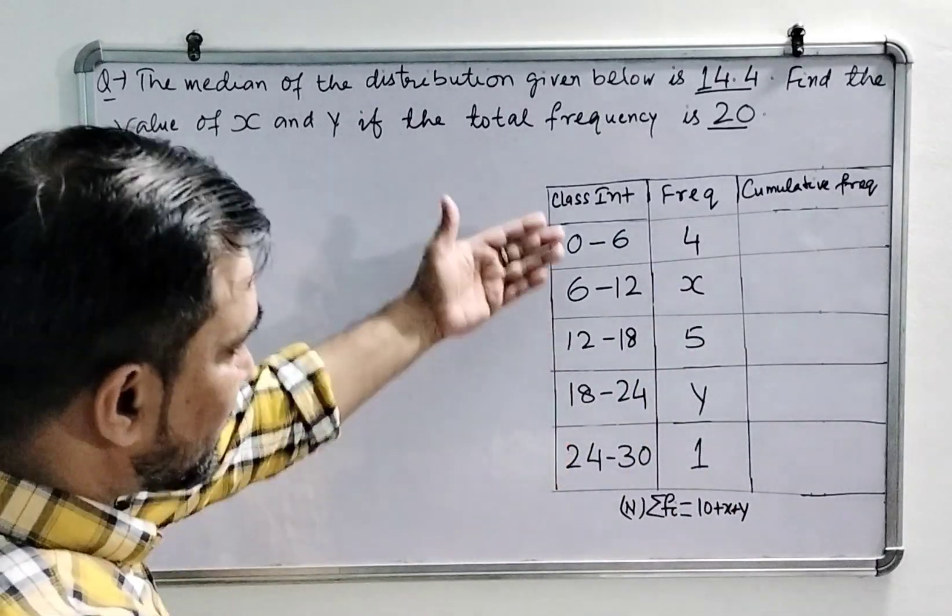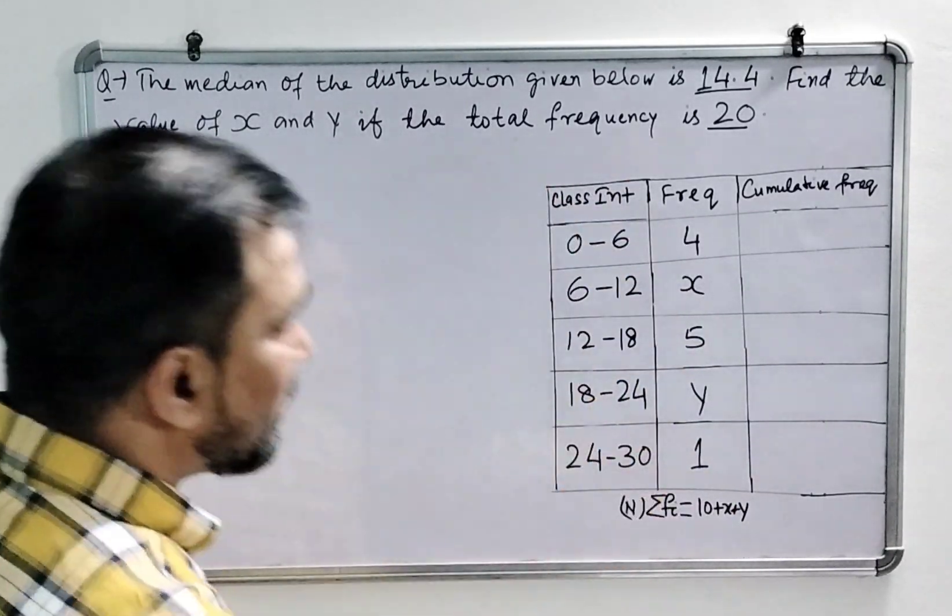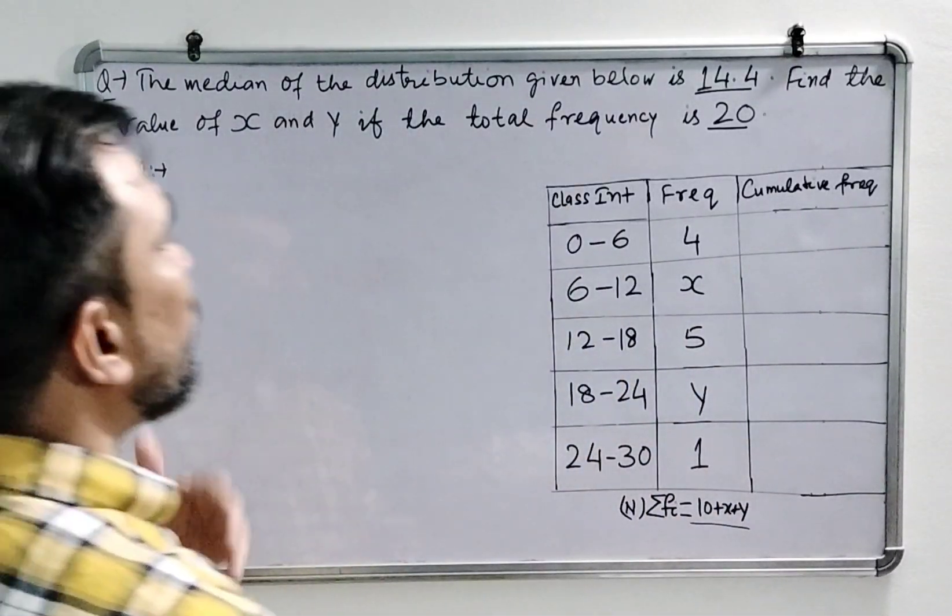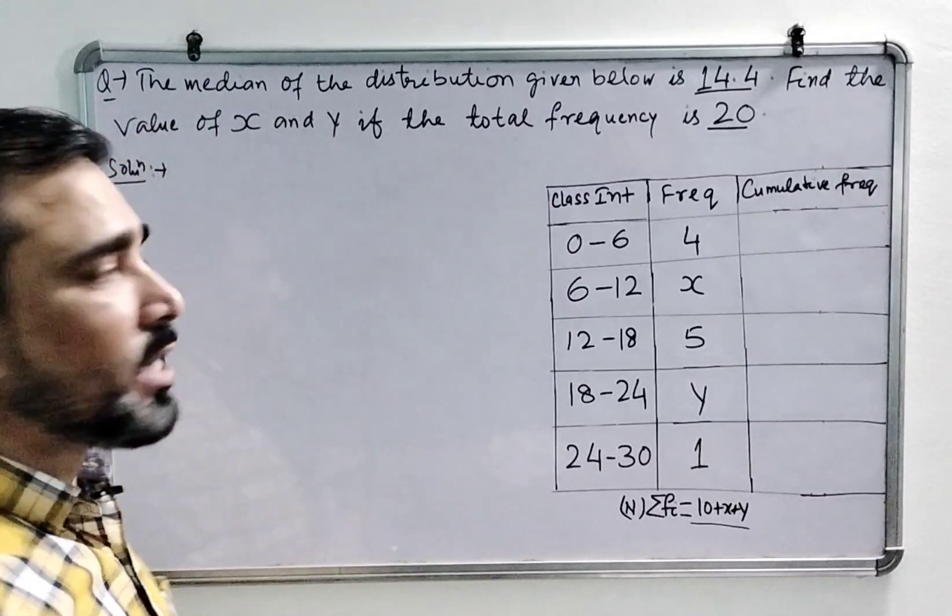The table is displayed here. The class interval is continuous, the frequency is displayed here, and the sum of frequency if we calculate is 10 plus x plus y. Now to find the median, first we calculate the cumulative frequency.